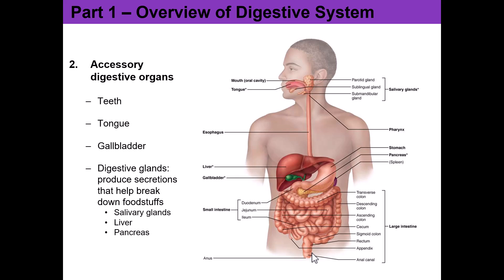These accessory organs include the gallbladder, the liver, the pancreas, and your salivary glands up here in the mouth area. They are all contributing to digestion, but those specific accessory organs are not part of the pathway of food.